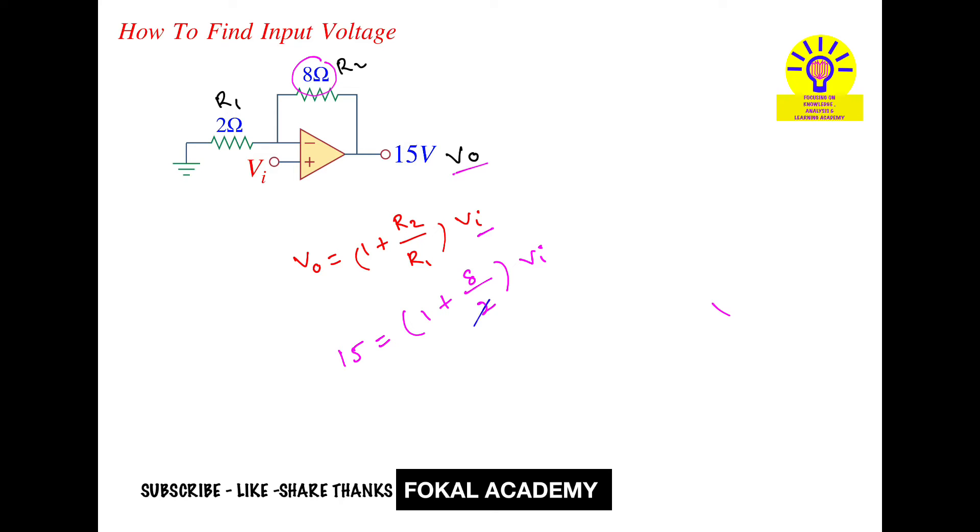2 ones 2, 4s. So 4 plus 1, 5. So 5 VI equals 15. From this, VI is 3.